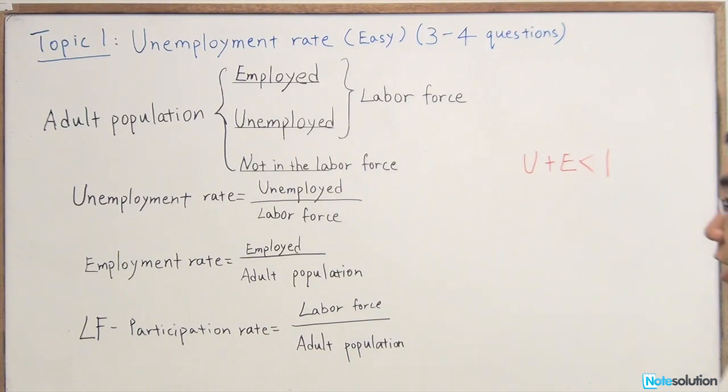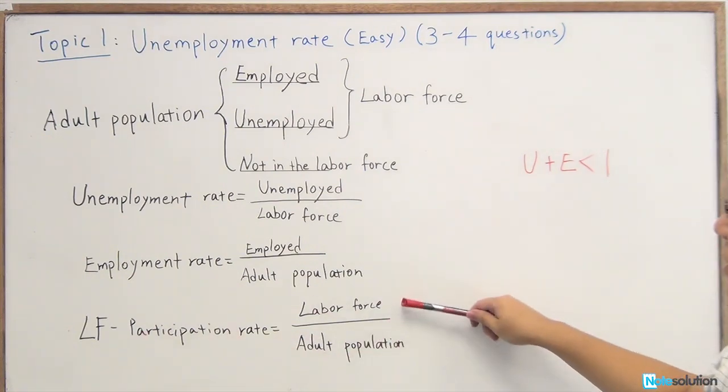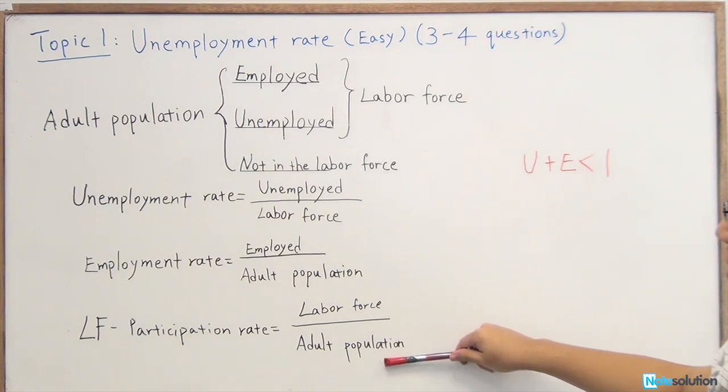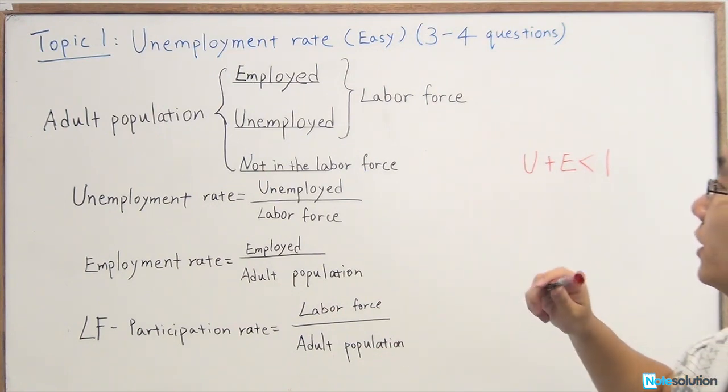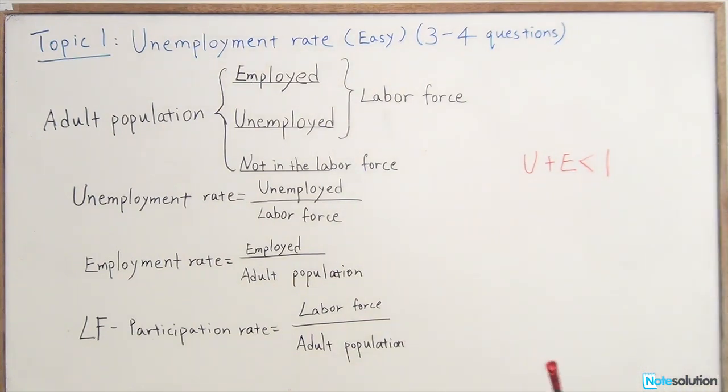For the last part is the calculation of the labor force participation rate, which is using the labor force divided by the adult population. Here, the first step of the general terms and the definition is finished.